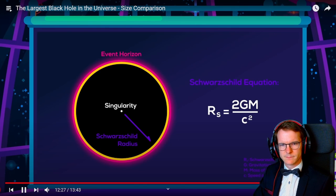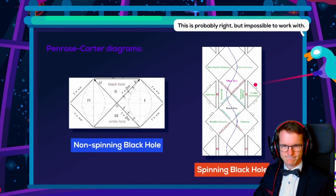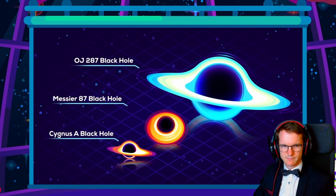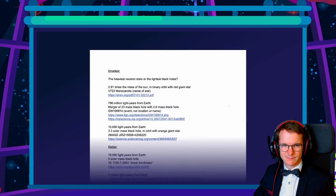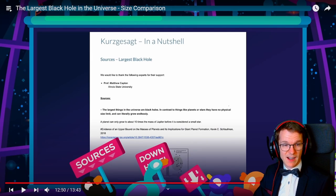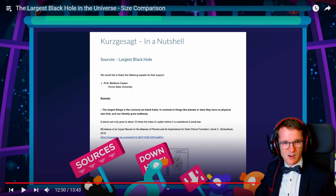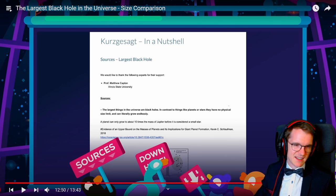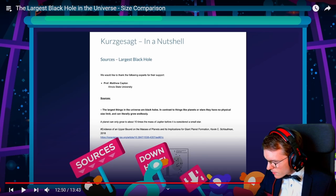In reality, physics on these scales is a bit fuzzy — some of the black holes they discussed may be way smaller or way bigger and we just don't know. They addressed this by comparing different sources and using different mass calculations to arrive at a standardized list, working with Professor Matthew Kaplan from Illinois State University. That is absolutely amazing work. Please subscribe to them — this is genuinely exceptional.